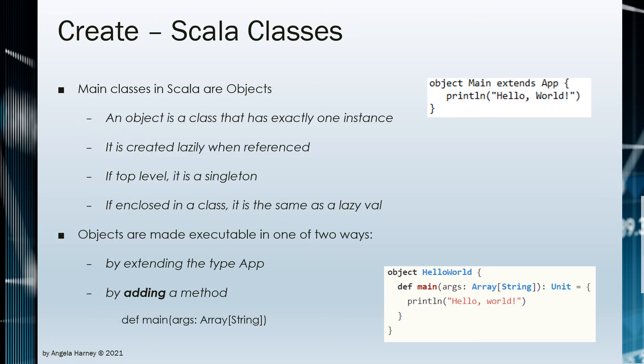The main class in Scala is an object. An object in Scala has exactly one instance. By default, it is created with lazy evaluation — more on this later in the data frame video in this series. Lazy evaluation allows a Scala class to be a candidate for a Snowpark object such as a user-defined function. The main class in Scala can also be a method nested within an object — more on this later in this series as well.